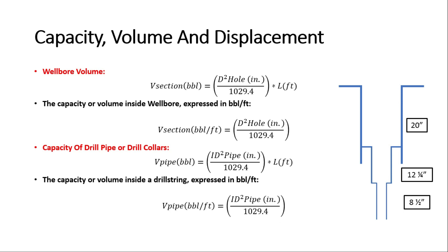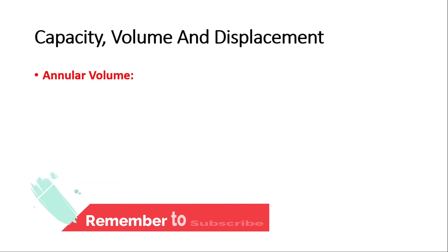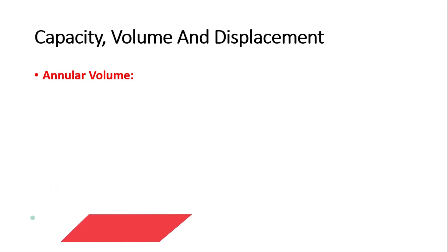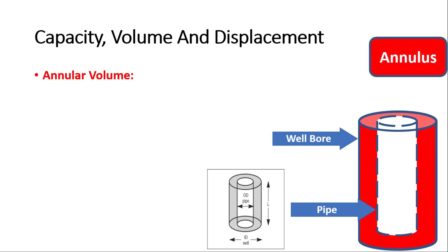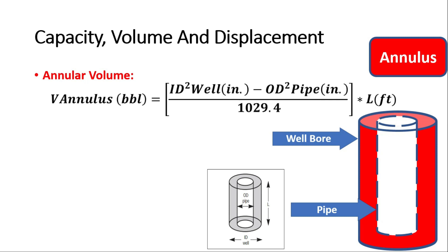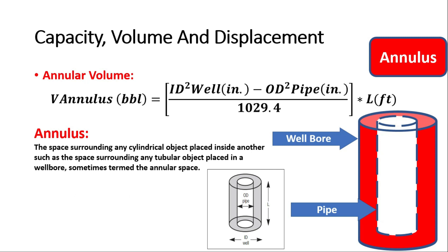All previous calculations assumed a hole without a drill string. If you run a drill string in hole, another parameter must be calculated — it's called annulus volume, defined as the space surrounding any cylindrical object placed inside another, such as any tubular object placed in a wellbore, sometimes termed the annular space. The space between the drill string and the wellbore is the annulus, as is the space between casing and drill string, or wellbore and casing — the last used in cement job calculations for amount of cement required. Annulus volume = (ID_well² − OD_pipe²) / 1029.4 × length of section.